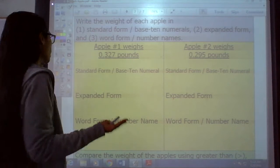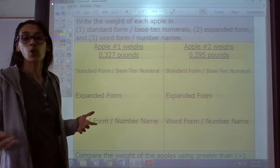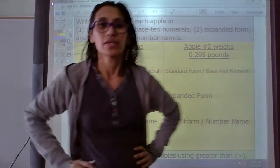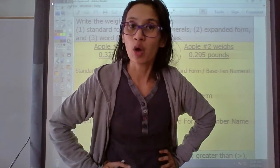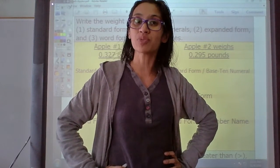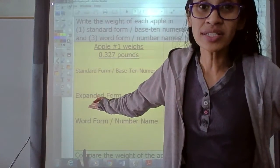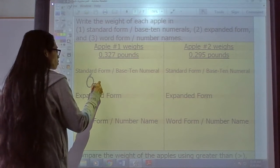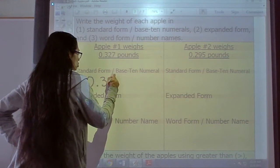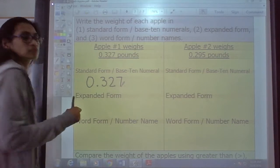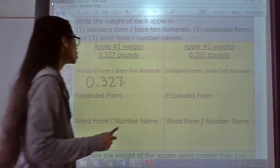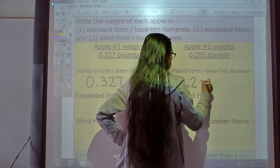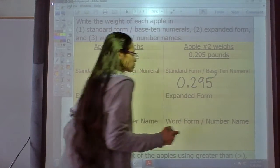All right, so the first thing we have to do is write the standard form. Another way to say that is base-ten numerals. Okay, this is so easy. I hope you remember. Remember standard form, base-ten numerals. You write it just with the digits, just how it is. So easy. So right here, look, just write this digit zero, decimal point, three, two, seven. Easy. The next one, what do we write? Just copy that. Zero, decimal, two, nine, five. Easy.